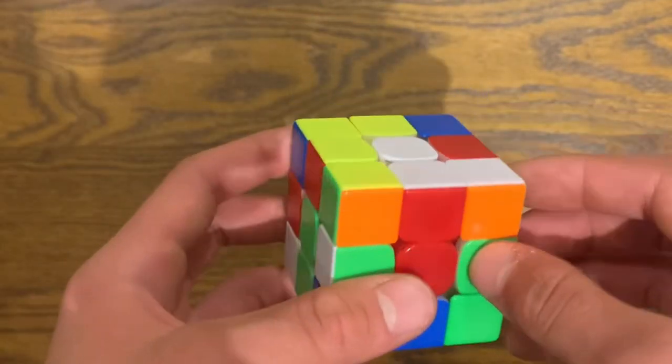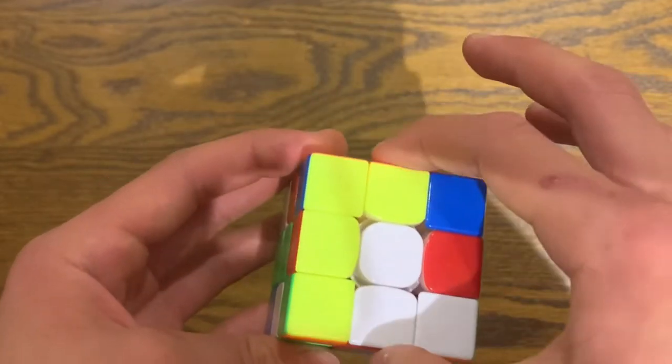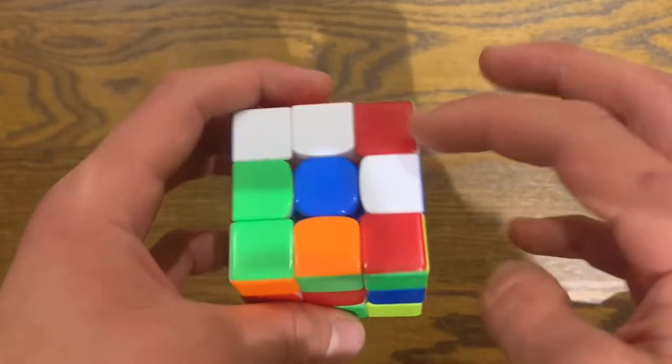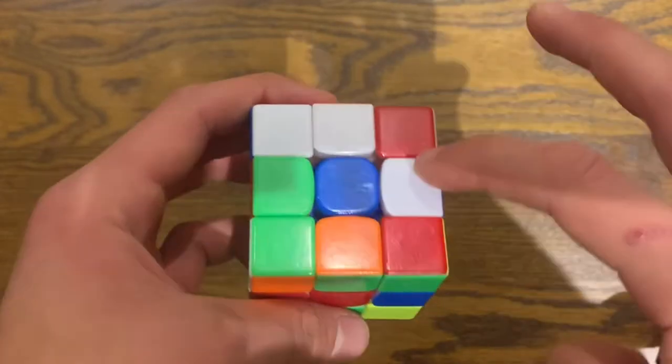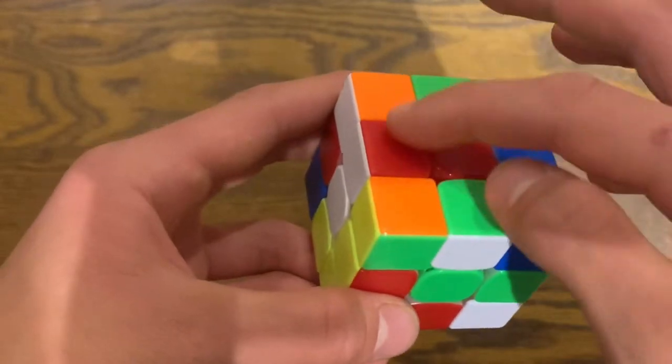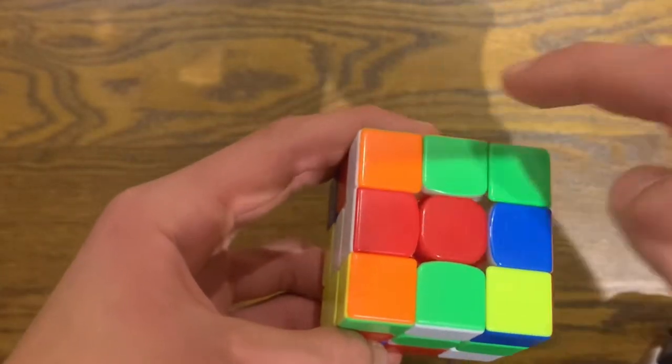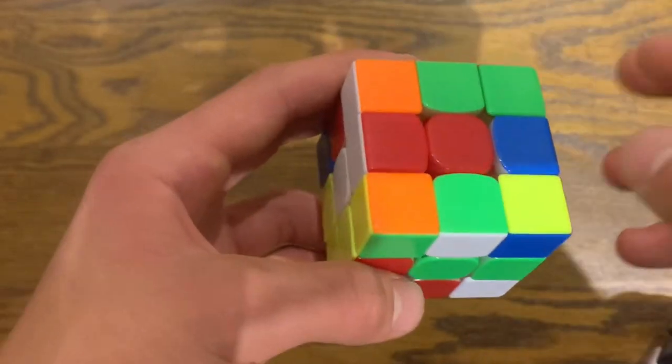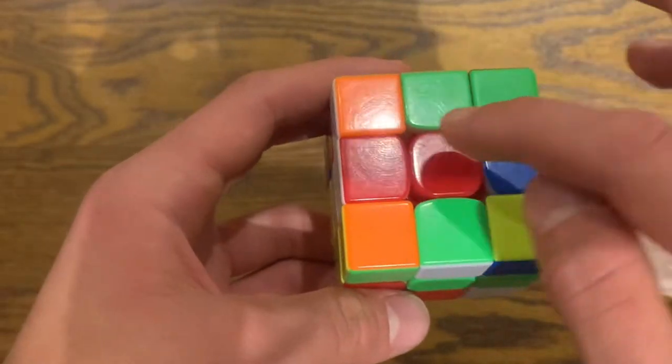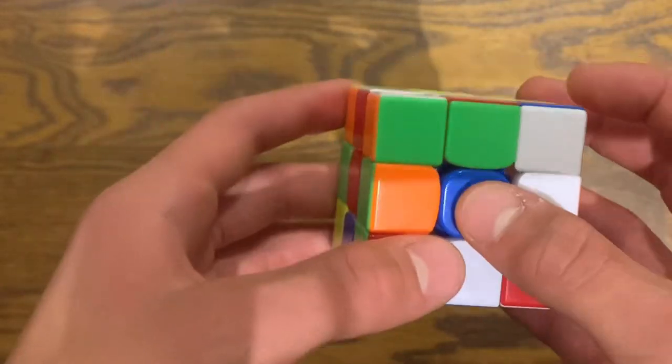Before we begin, we have to clarify what pieces are what. Pieces that are in the middle of the cube are known as edge pieces. These are all edge pieces. The ones in the corner are just corner pieces. These are edge pieces. These are corner pieces. And finally, we have the very simple centers. These are all centers. They're always located in the middle of the cube. Not too complicated.